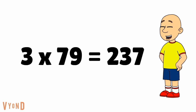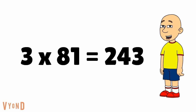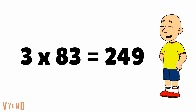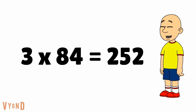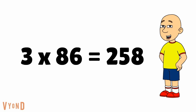3 times 79 equals 237. 3 times 80 equals 240. 3 times 81 equals 243. 3 times 82 equals 246. 3 times 83 equals 249. 3 times 84 equals 252. 3 times 85 equals 255. 3 times 86 equals 258.